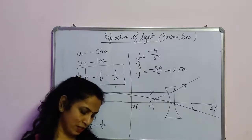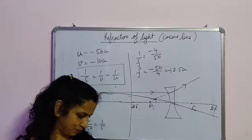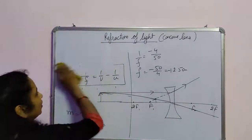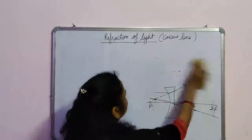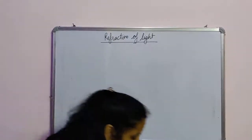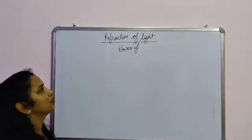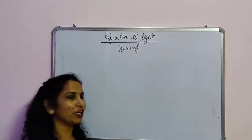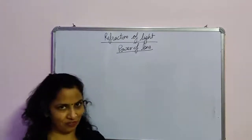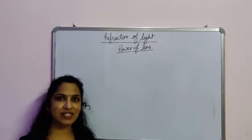Now I am going to complete this chapter by explaining the last part — the power of a lens. First, what is the power of a lens? This is not the same as power in physics where power = work/time. The power of a lens means its converging or diverging capability.